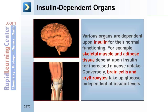Various organs are dependent upon insulin for their normal functioning. For example, skeletal muscle and adipose tissue depend upon insulin for increased glucose uptake. Conversely, brain cells and erythrocytes take up glucose independent of insulin levels.